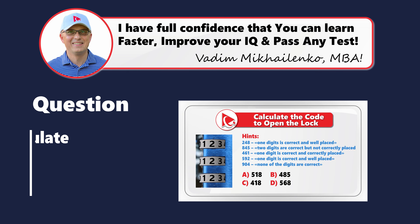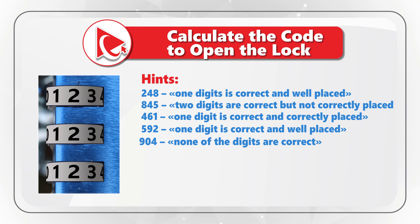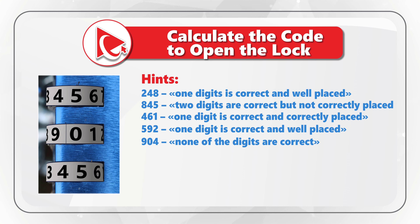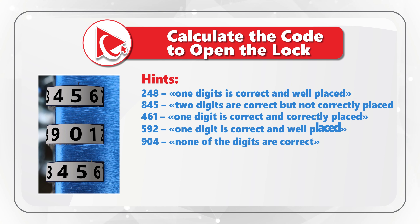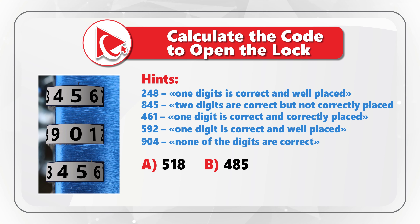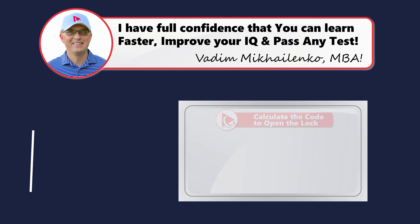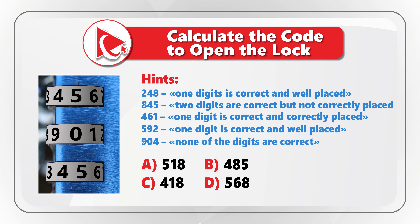Here is a challenging problem to boost your cognitive abilities. You're presented with five hints and need to unlock a code to open a lock. Hint 1: digits 248 — only one digit is correct and well placed. Hint 2: digits 845 — two digits are correct but not correctly placed. Hint 3: digits 461 — only one digit is correct and correctly placed. Hint 4: digits 592 — only one digit is correct and well placed. Hint 5: digits 904 — none of the digits are correct. Select one of four choices: A=518, B=485, C=418, D=568. I'm moving forward to share my answer.